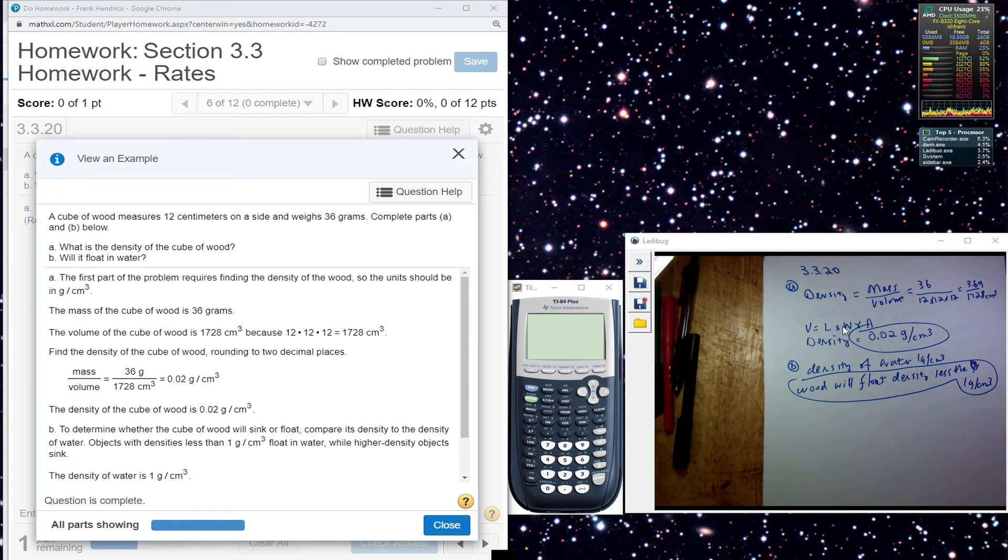Volume is simply the length times the width times the height. So I have 12 times 12 times 12, it's a cube. So I have here 36 over 1728 cubic centimeters here, so it simplifies.